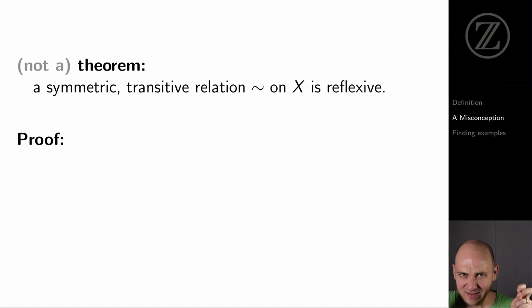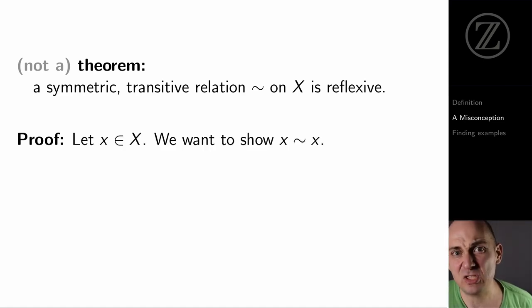So here's the proof. Let's let x be some element of big X, and I'm trying to show that x tilde x. That's what I'm trying to prove. I'm trying to prove reflexivity, and I'm going to get to use symmetry and transitivity along the way.